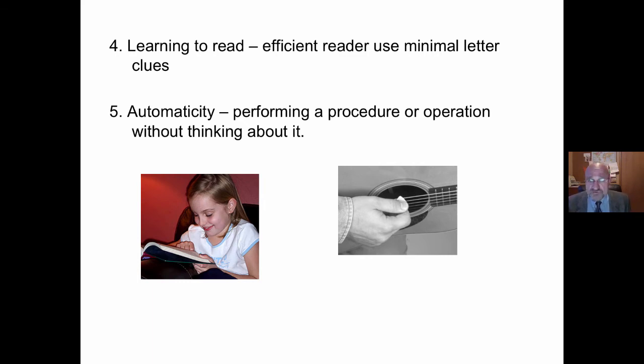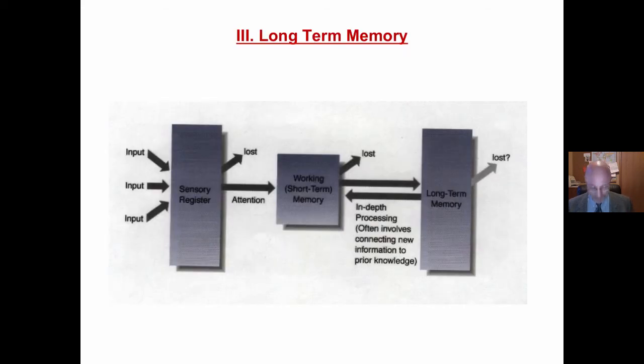Automaticity is performing a procedure or operation without thinking about it. We want our reading sub-skills to be automatic, to recognize words. That's why we teach the process to develop the skill. Different cognitive processes related to comprehension and word identification. Not so they learn our process, but so they can do it automatically. Teach the process to develop the skill.